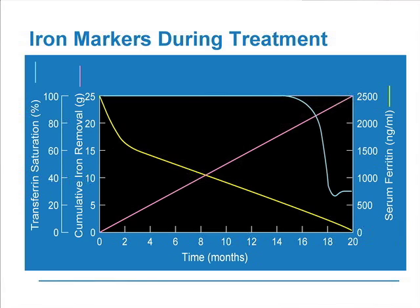How do the iron markers look during treatment? Here is a fairly typical diagram of an individual who over 18 to 20 months is donating iron by phlebotomy. We're watching the transferrin saturation on the left and the cumulative iron removal as a straight diagonal line up to the right. The transferrin saturation doesn't really come down until quite late in the course of treatment, whereas the serum ferritin — the yellow line on the right vertical axis — comes down progressively. It doesn't reach the target level until about 18 months, indicating a large amount of excessive storage iron that takes that length of time to deplete.